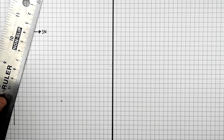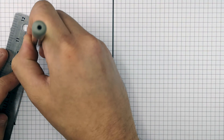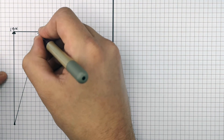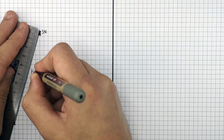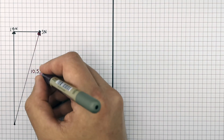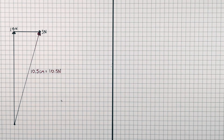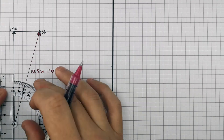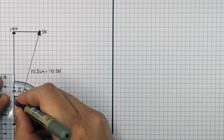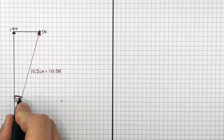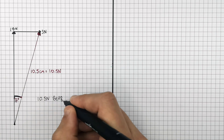Now measure the line from the tail of the 10 Newton northerly force to the tip of the three Newton easterly force. This line measures 10.5 centimeters, which using our scale gives a resultant force of 10.5 Newtons. That is the magnitude — for the direction, we use a protractor, and the bearing is 17 degrees. So the resultant force acting on this object is 10.5 Newtons with a bearing of 17 degrees.